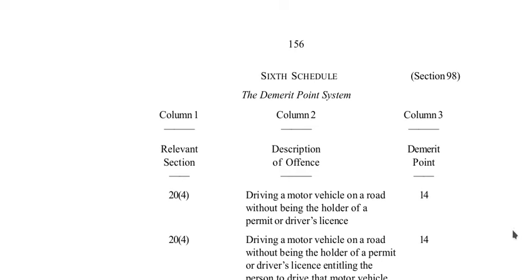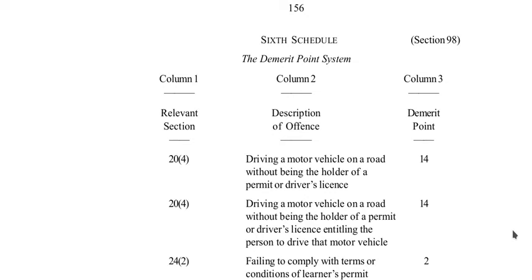The offense is driving a motor vehicle on a road without being the holder of a permit or driver's license entitling the person to drive that motor vehicle. So it could be that the person has a private license but is driving a PPV or a commercial vehicle. This is covered by Section 20 subsection 4 of the Act — let us look at that.